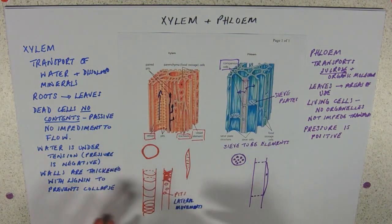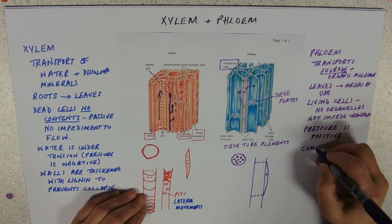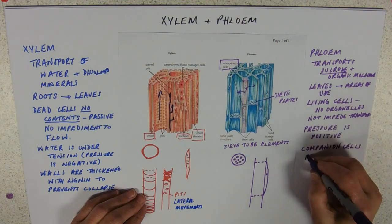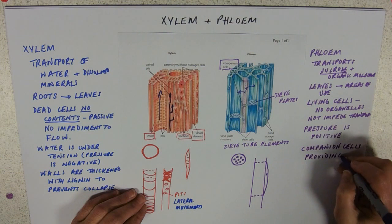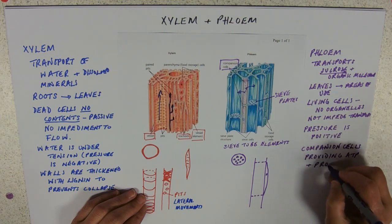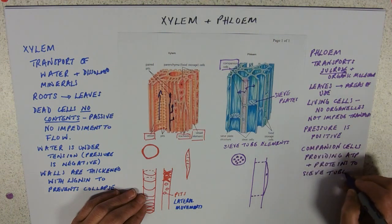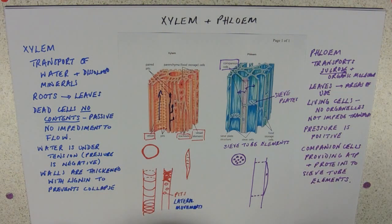So, you need to know some of the features. You need to be able to recognise those from photographs, from electron micrographs, from 3D pictures, from 2D pictures like mine. You need to be able to recognise them from the top and the side. And you need to know the sort of significance of their features. So, we'll just add in companion cells there. So, companion cells are always associated with them, and they are providing ATP and proteins to the sieve tube elements. Okay, do have a look at some more diagrams, would be my advice.